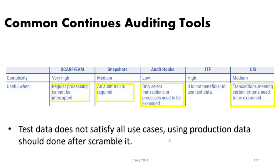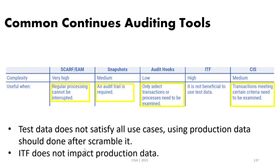When using production data for testing, the data needs to be scrambled — all sensitive information must be removed from it. On the other hand, a key benefit of ITF is that it does not impact production data, because the dummy entity is separate and fictitious within the application. That covers all the material on continuous auditing, continuous assurance, and computer assisted auditing tools.